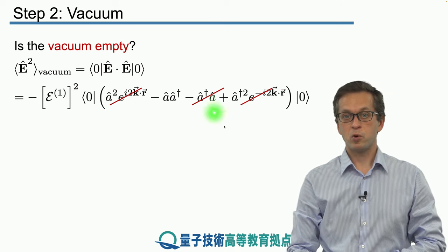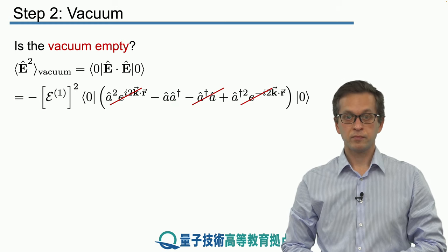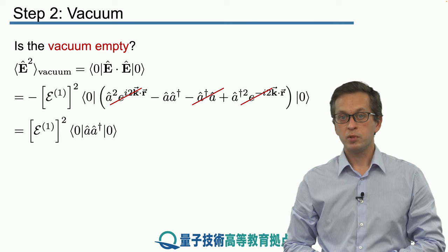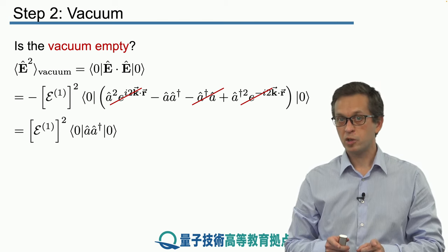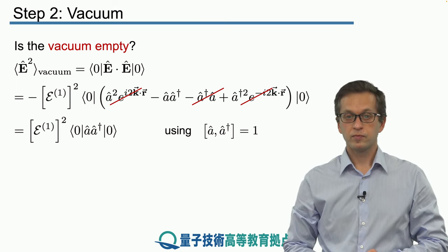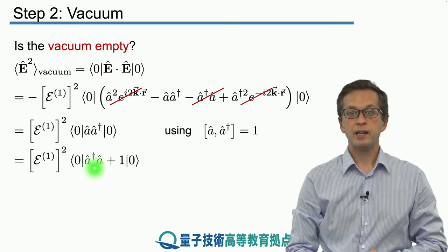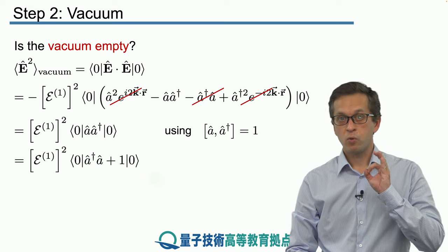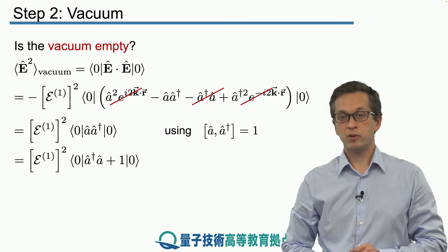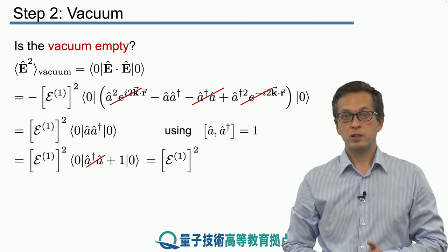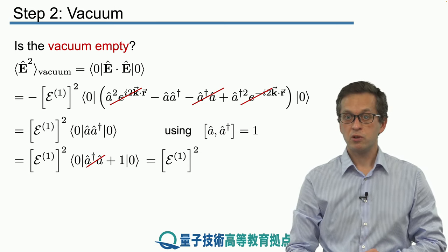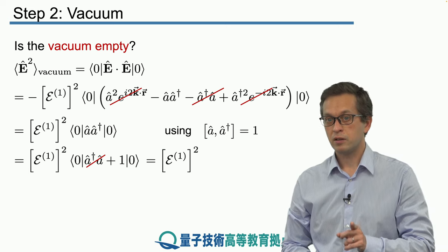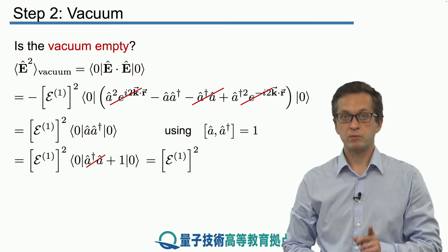All we are left with is this term: minus A A dagger. So let's write that down. And using the commutation relation, we can rewrite it in normal ordering. Normal ordering means that all the daggers appear on the left and all the annihilation operators appear on the right. A A dagger is equal to A dagger A plus one. We see that if we apply A dagger A, which is just the number operator, on zero, we get zero. So the first term disappears and we are left with the following result: the average of E squared when the field is in vacuum is not zero - it's given by the one photon amplitude squared.